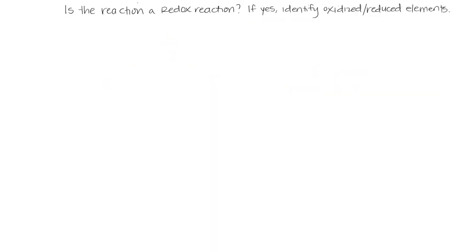Let's try some examples. We want to determine whether or not we have a redox reaction, and if we do, let's identify the oxidized and reduced elements. Number one: tin plus HCl produces SnCl₂ and H₂. We start by determining the oxidation states for each element in the reaction. Tin is in its elemental form, so its oxidation state is zero. In HCl, Cl is minus one and hydrogen is plus one.